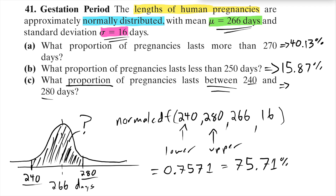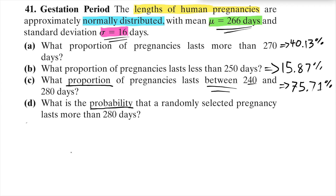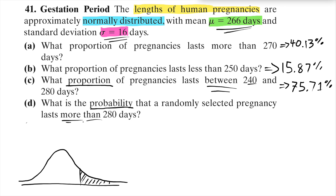The pictures are helpful — they keep you straight on where to start and stop, and they give you a chance to ask yourself, does this look right? Part D asks for a probability, but finding probabilities works the same way as finding proportions — they're both just areas under the curve. We're looking for the area to the right of 280, so I'm going to use normal CDF, start at 280, and stop at something very large.